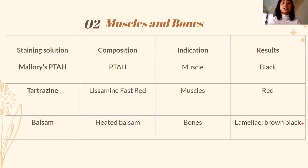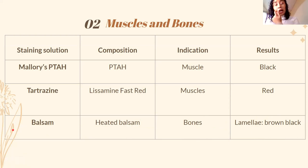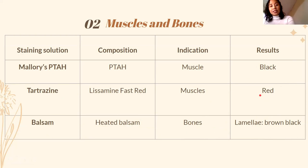Moving on to muscles and bones. For bone specifically, balsam stains the lamellae brown-black. The remaining stains for this category are calcium stains. We have Mallory's phosphotungstic acid hematoxylin (PTAH) — collagen stains black with Mallory's and red with tartrazine.